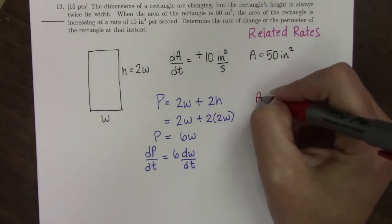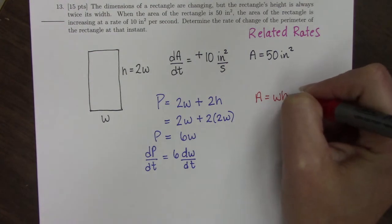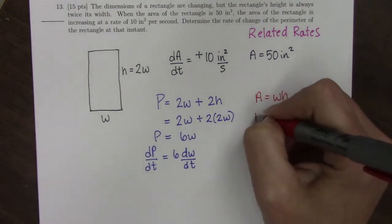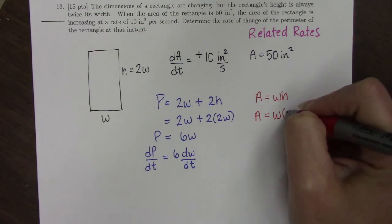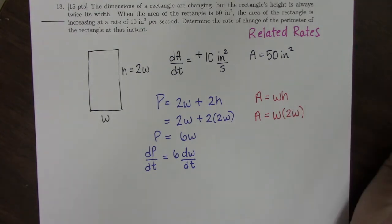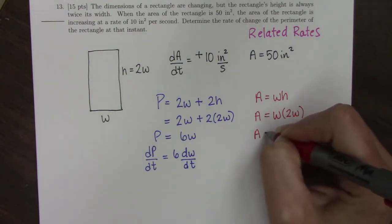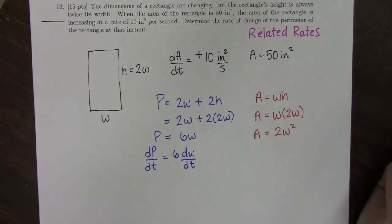So the area of this rectangle is width times height. And once again, to get everything in variable W, I'm going to replace the height with 2W. So now the area is W times 2W.